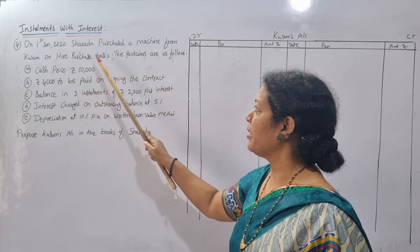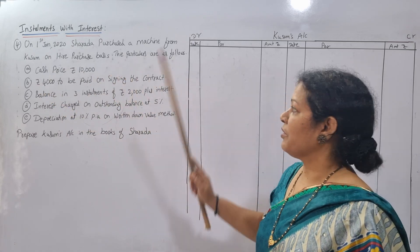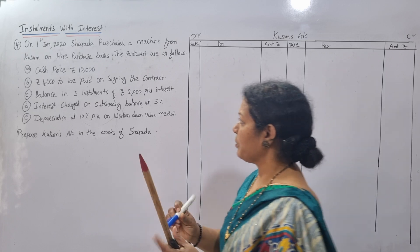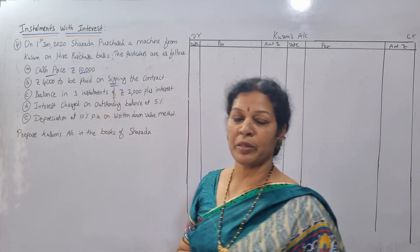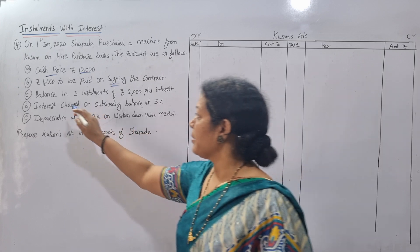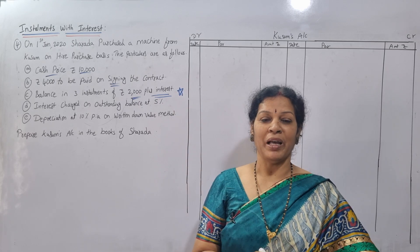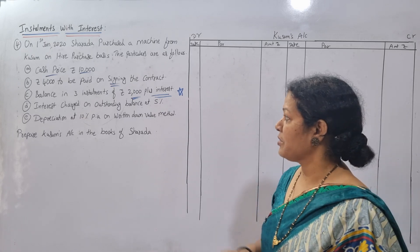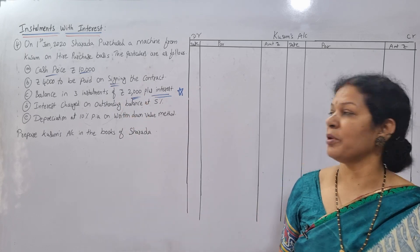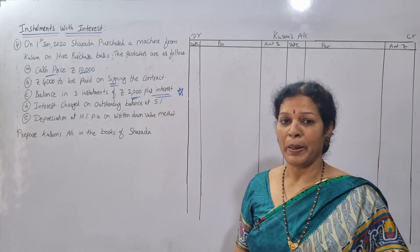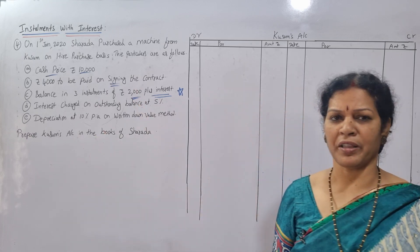On 1st January 2020, Sharada purchased machinery from Kusum on hire purchase. Sharada is the purchaser, Kusum is the vendor or seller. The particulars are: cash price is 10,000; 4,000 to be paid on signing of the contract — this is the down payment or initial payment. The balance is to be paid in three installments of 2,000 plus interest. Interest is charged on the outstanding balance at 5%, and depreciation is 10% per annum on the written down value method. Prepare Kusum's account in the books of Sharada only.